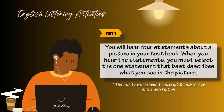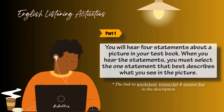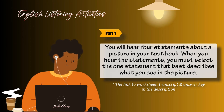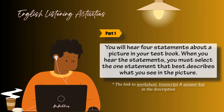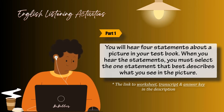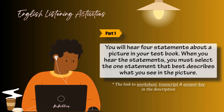Number 10. Look at the picture marked number 10 in your test book. A: Trees are being planted near the path. B: People are jogging along the track. C: There's a lamppost next to the path. D: A boat is floating on the water.